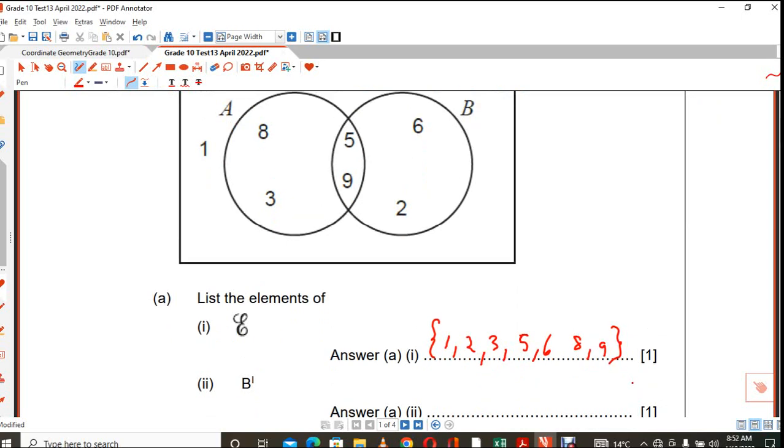And what is not in B? 1, 3 and 8. Most of you got that one right as well, right?